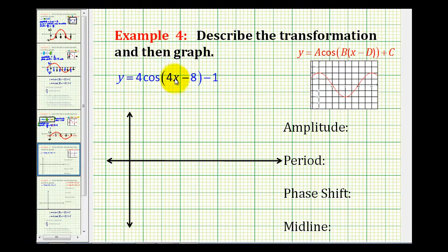Here's the fourth example of describing and then graphing a trig transformation. We have y equals 4 times cosine of the quantity 4x minus 8 minus 1.